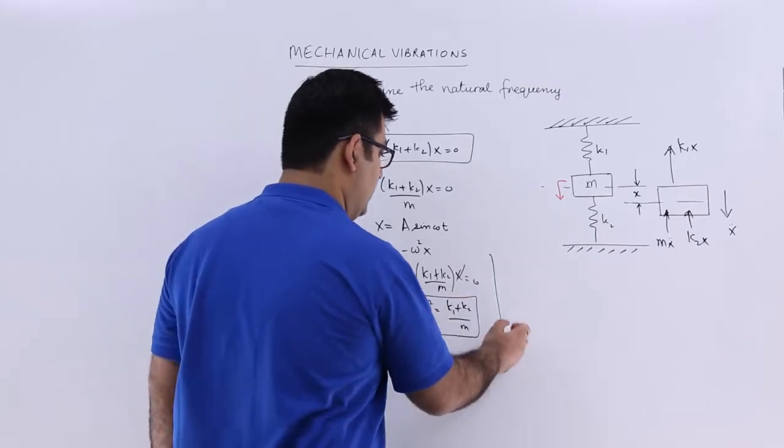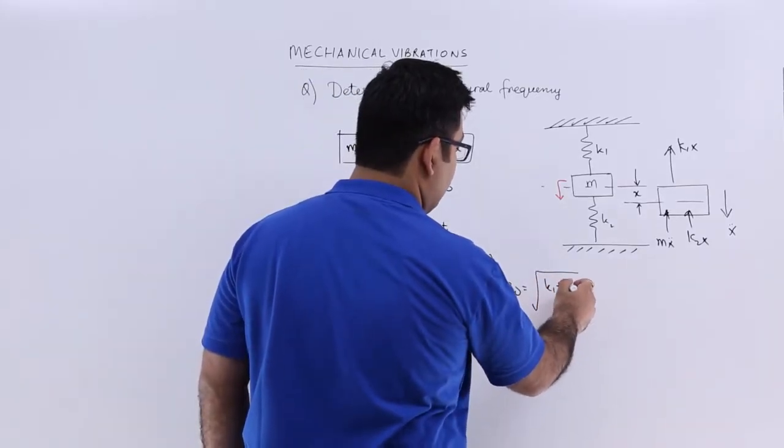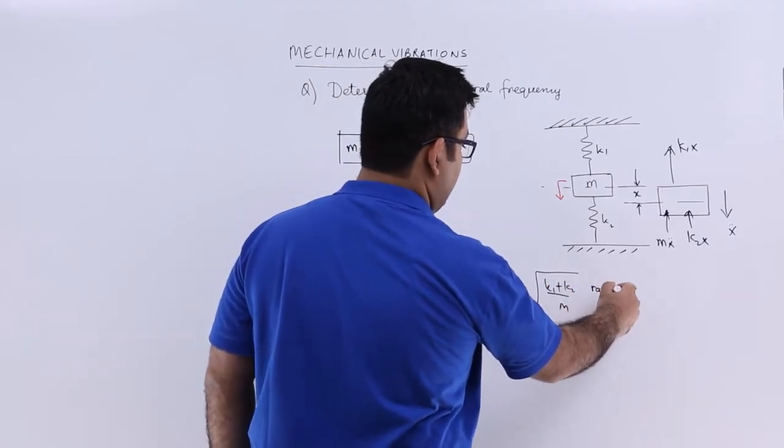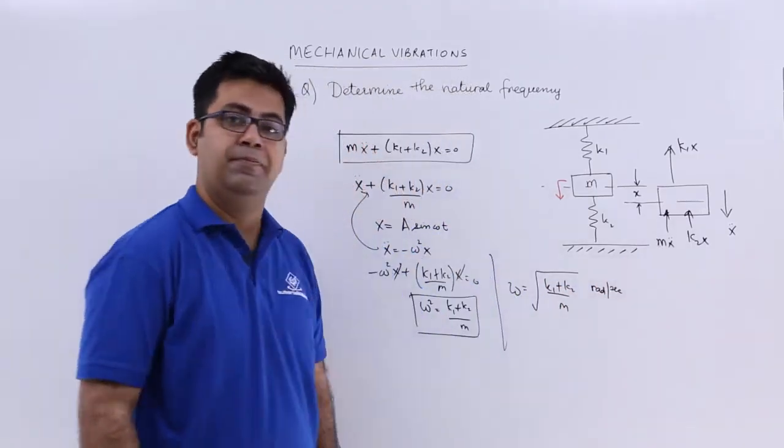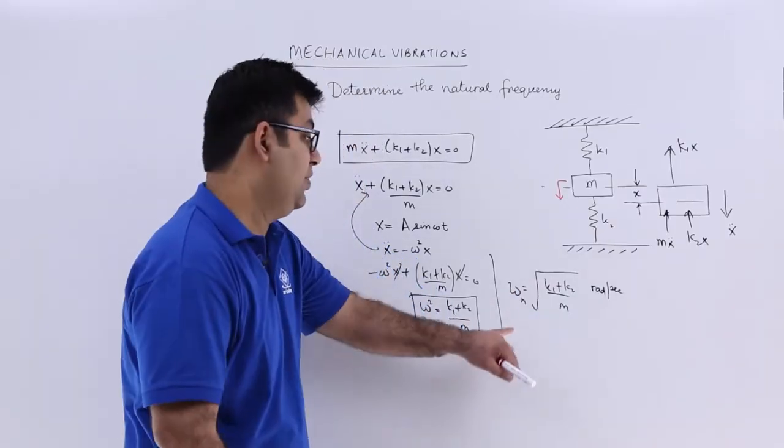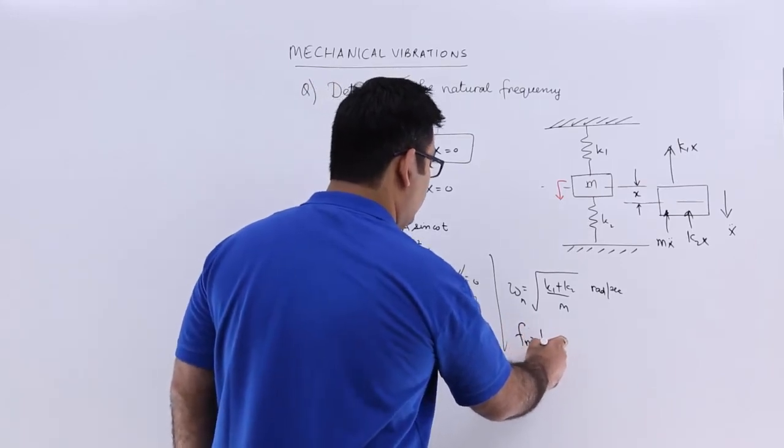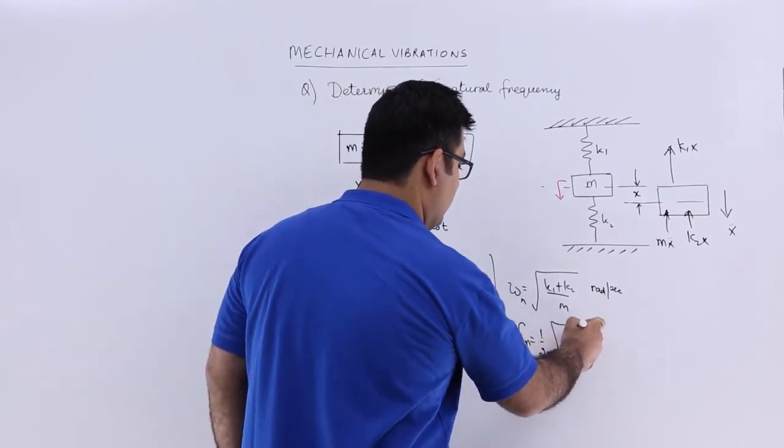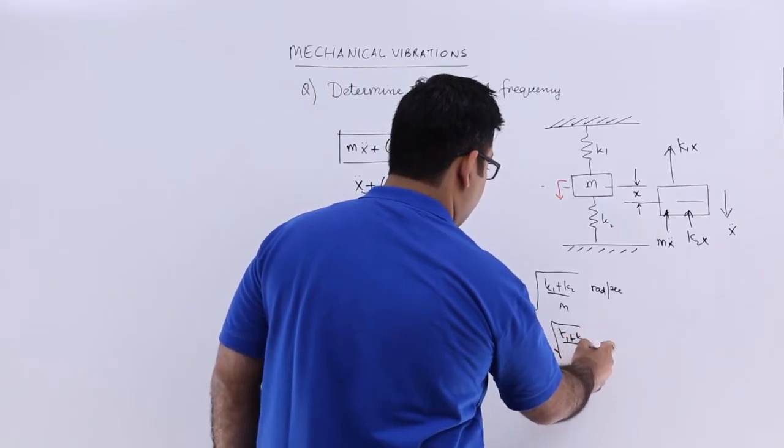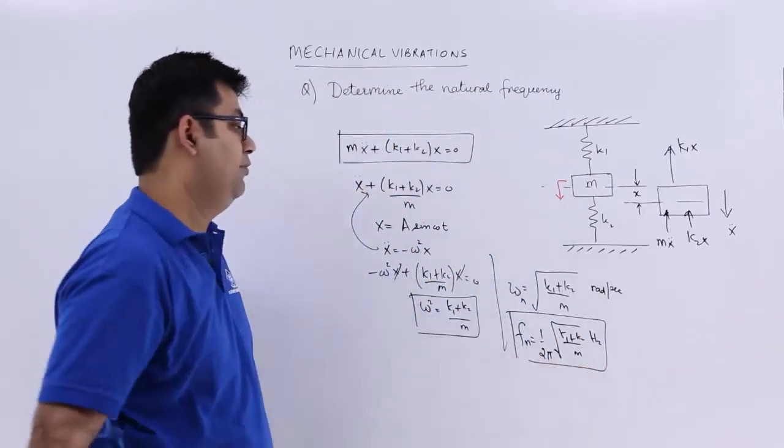So omega would be under root K1 plus K2 upon M, and this would be in radians per second. So the frequency in hertz would be Fn which is 1 upon 2 pi into under root K1 plus K2 upon M hertz. So this is the natural frequency.